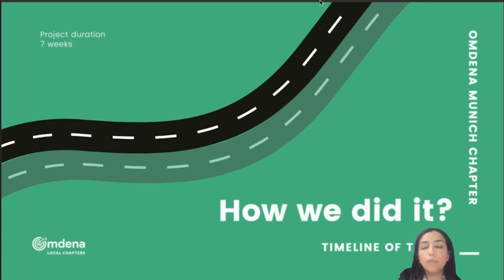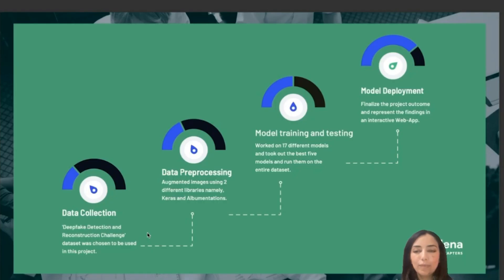The project timeline is seven weeks. Data collection is the most important activity for any project. During our literature survey, we found out that most of the datasets available for deepfake detection are either videos, or even if they are image datasets, they could not fulfill all of our requirements. The reason was that most available image datasets were not robust and generalized, in the sense that deepfakes were not generated using different GAN architectures. Therefore, from our literature study, we learned that the Deepfake Detection and Reconstruction Challenge dataset is most appropriate for our use because it could fulfill all of our requirements.